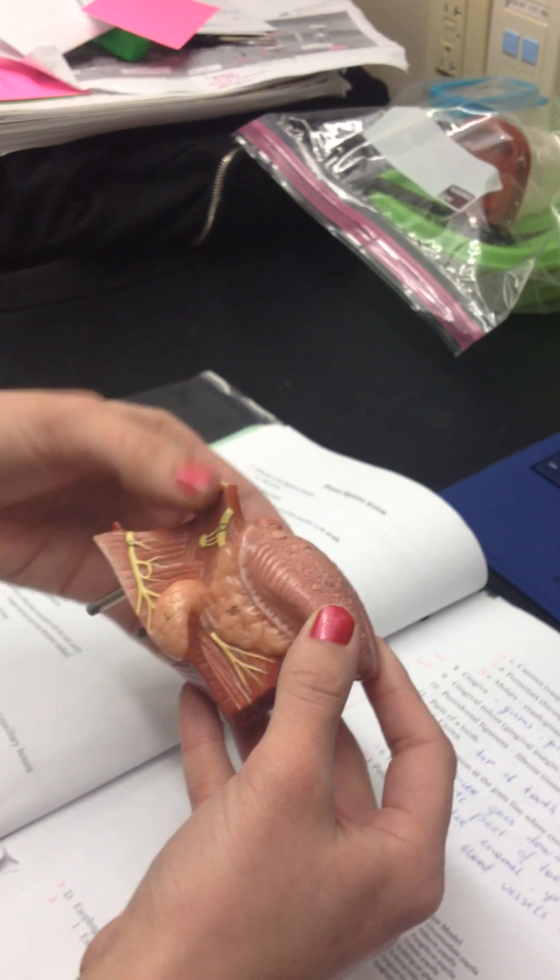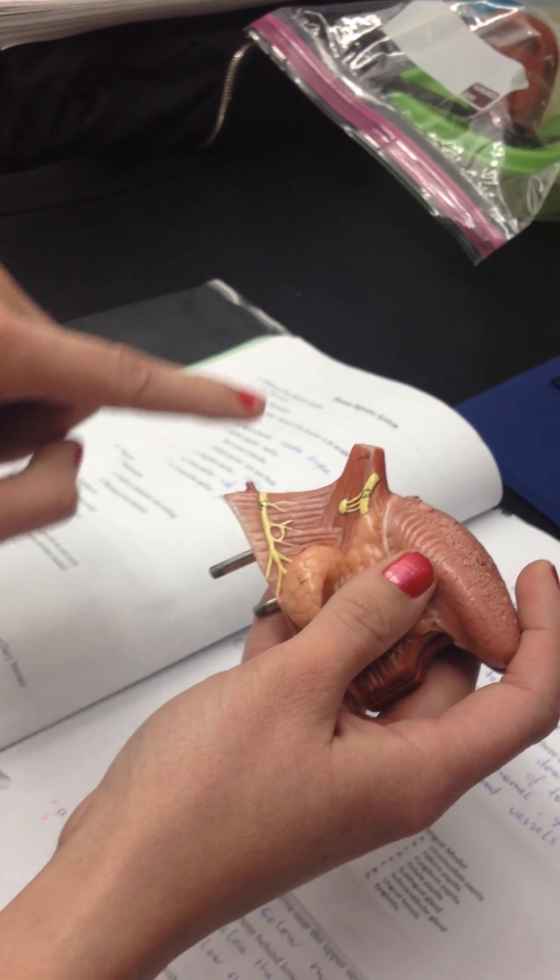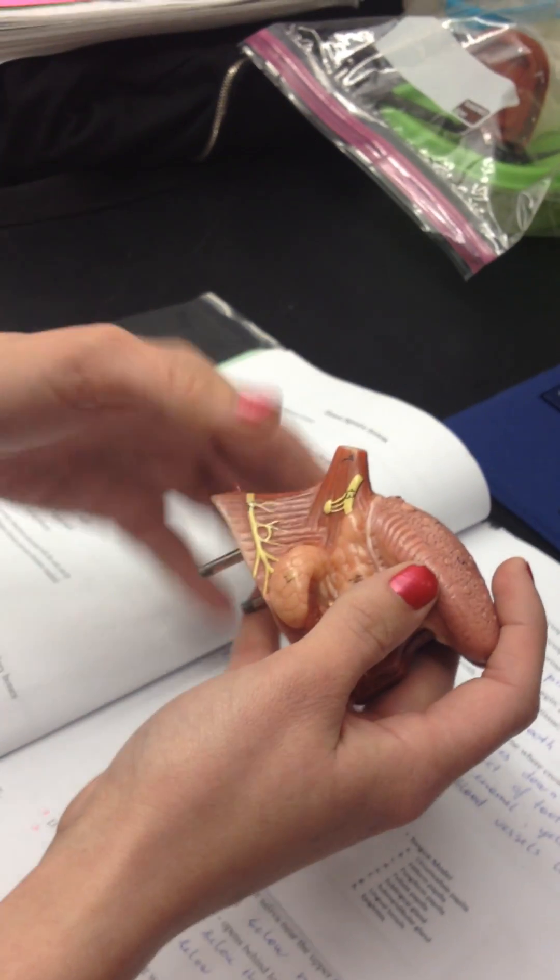Then we're going to go to the side. So here we can see two types of the three glands. Parotid will be back here, which we can't see. It's going to be the largest of the glands, so that one's missing.